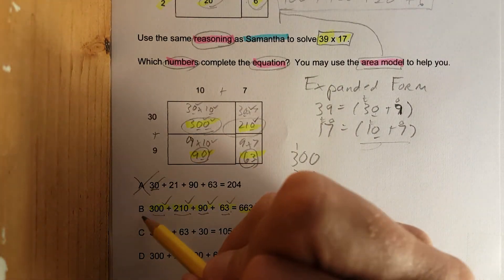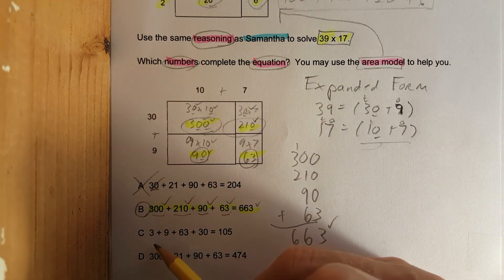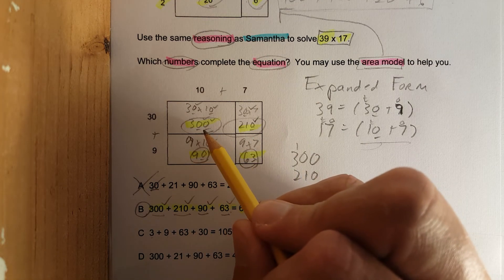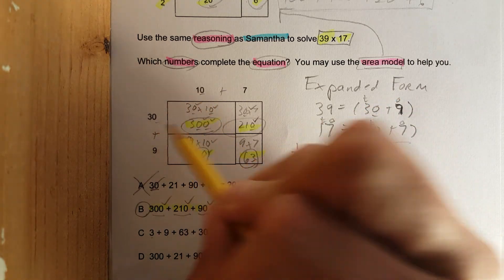Now just in case, we will eliminate C. What is going on with C? 3 plus 9, there is no 3, there's no 9, unless you're missing all the zeros, which we covered. If you underline the zeros and double check the zeros, this is not going to be an issue.